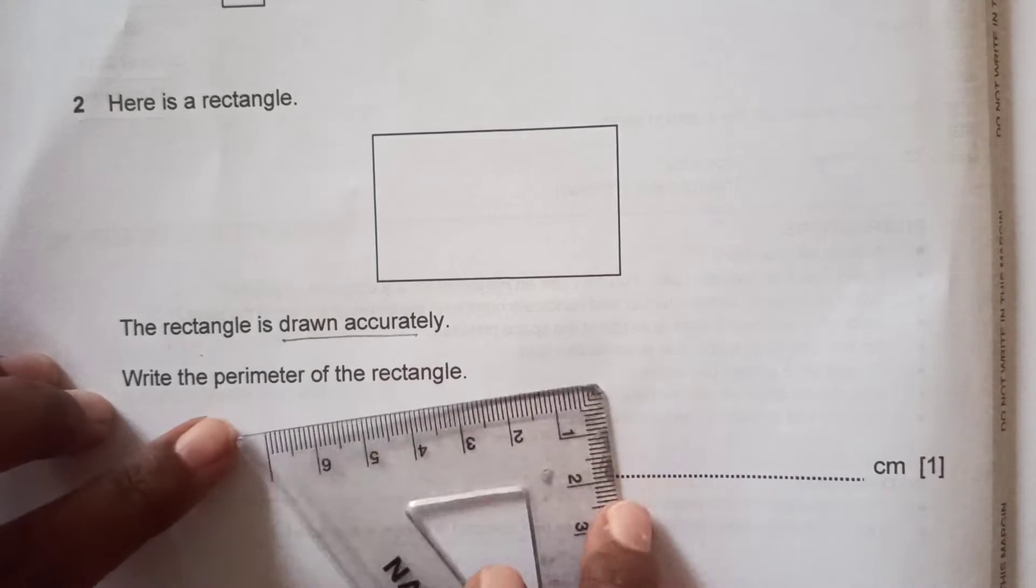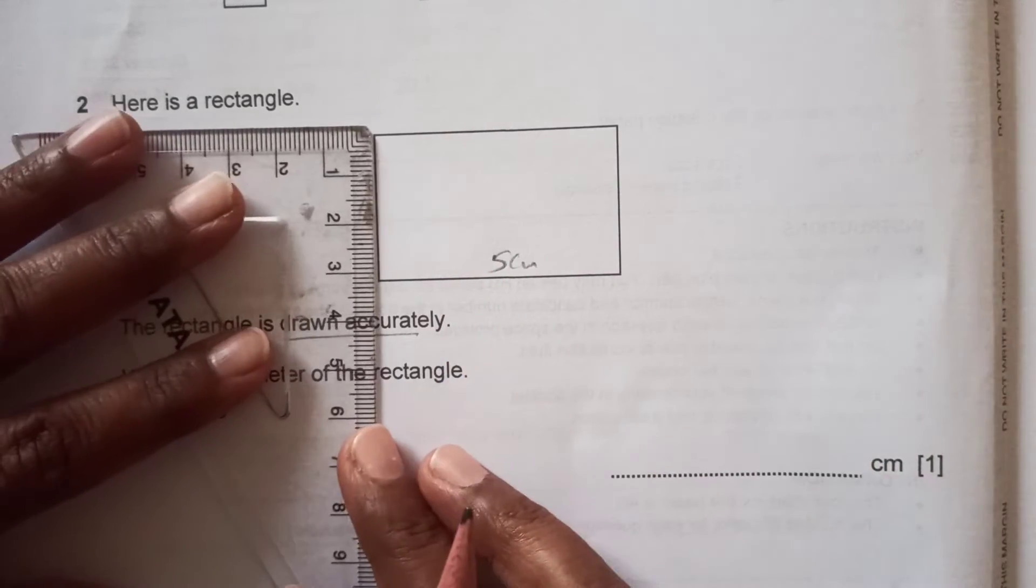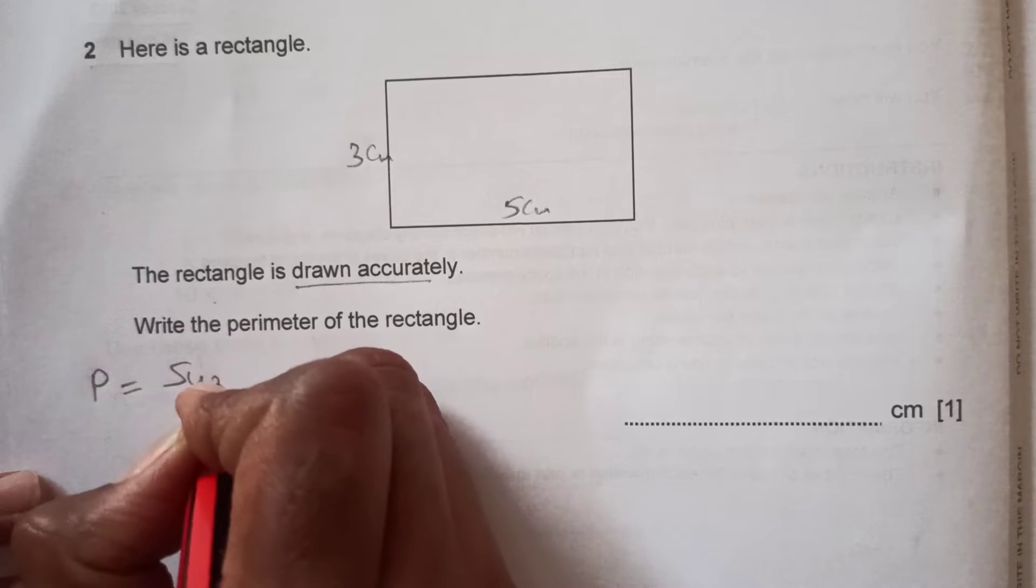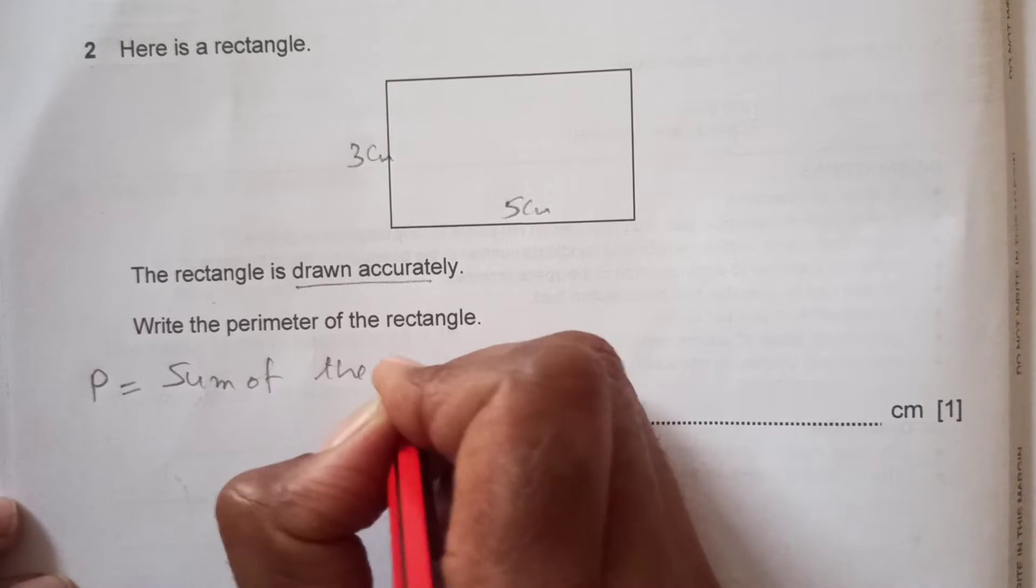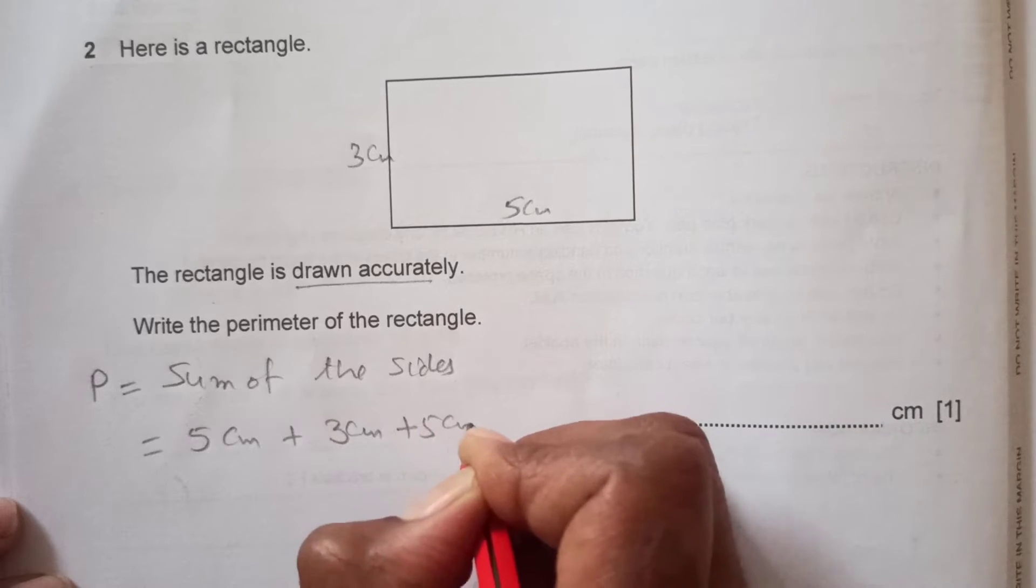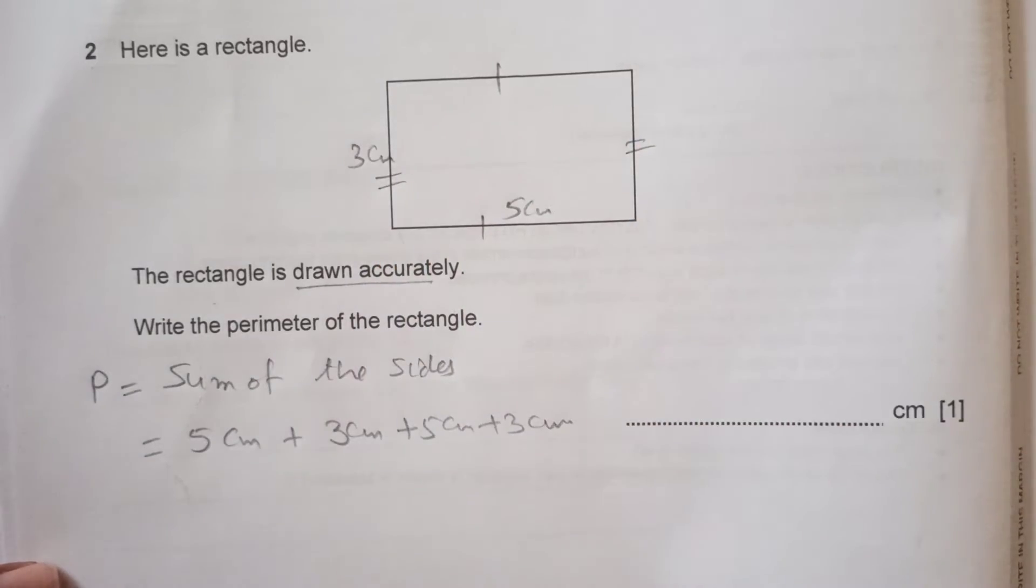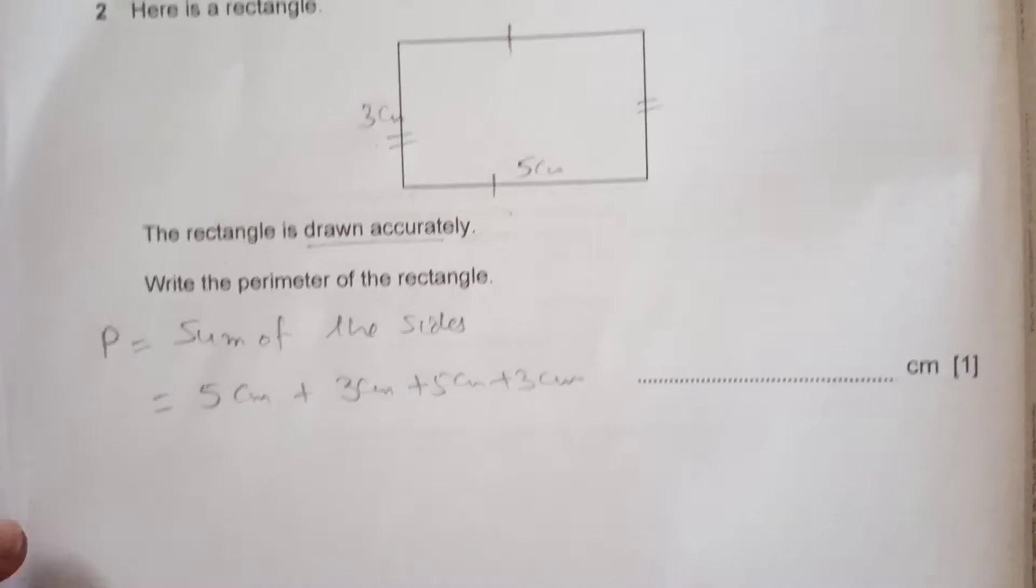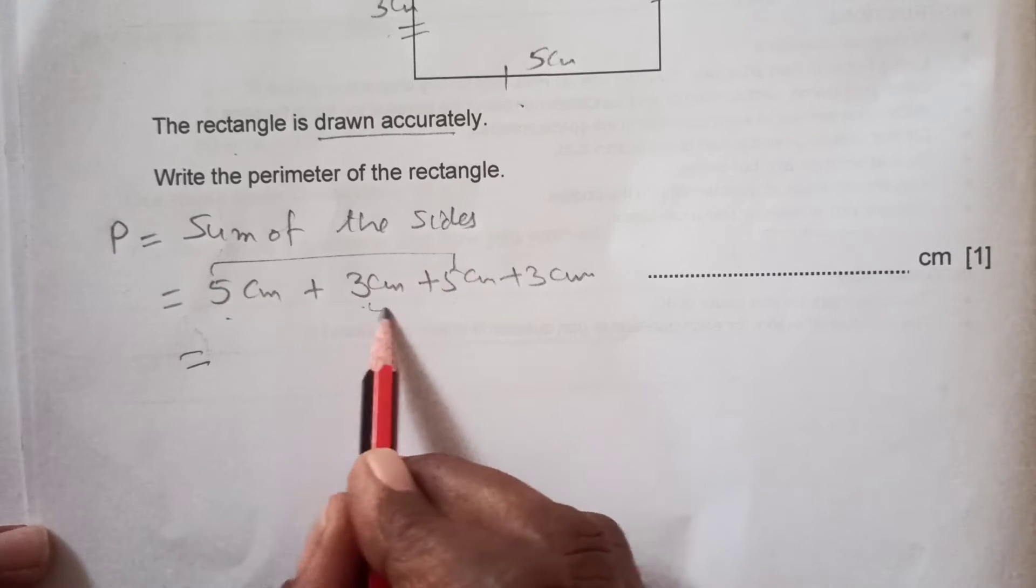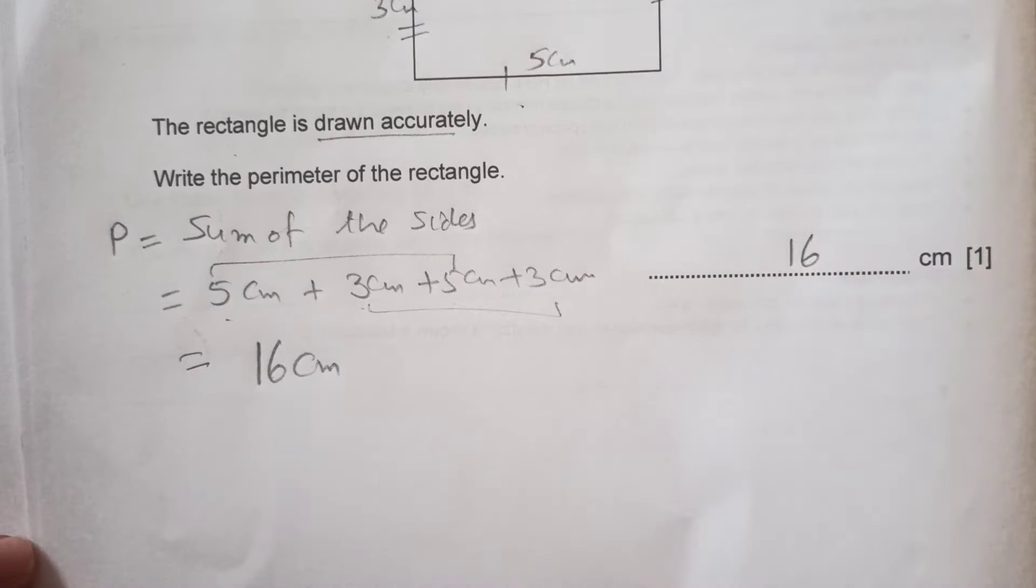This side we have five centimeters, and this side we have three centimeters. Now the perimeter is the sum of all the sides. So that means 5 cm plus 3 cm plus 5 cm plus 3 cm, because this is a rectangle, so opposite sides are equal. If this is 5, this is also 5. This is 3, this is also 3. Now add them together: 5 plus 3 is 8, 8 plus 5 is 13, or you can do 5 plus 5 is 10, and then this is 6, 10 plus 6 is 16 centimeters.